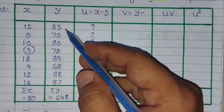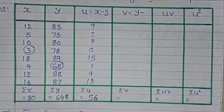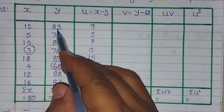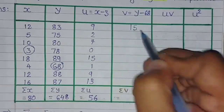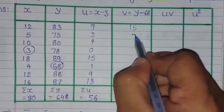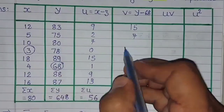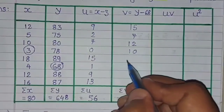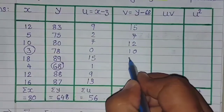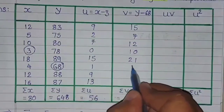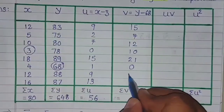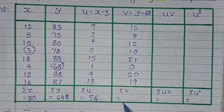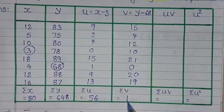Now for v, the least value from y is 68. So from each y value I will subtract 68. So 83-68 will be 15, 75-68 will be 7, 80-68 will be 12, 78-68 will be 10, 89-68 will be 21, 68-68 will be 0, 88-68 will be 20, and 87-68 will be 19. The sum of v, meaning sigma v, will be 104.